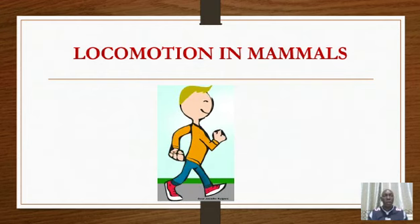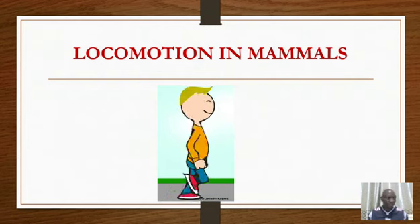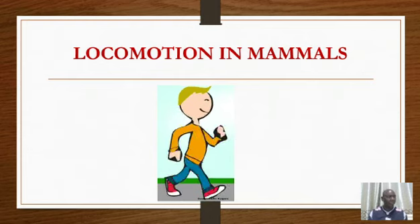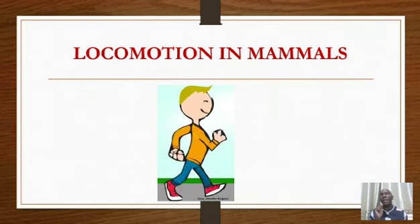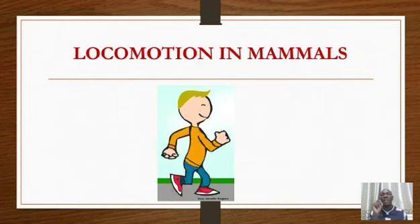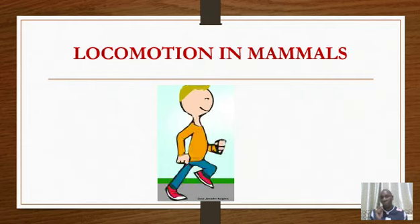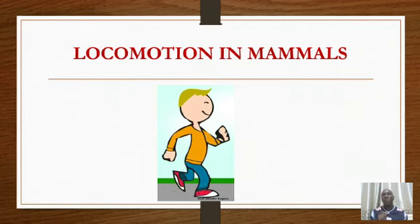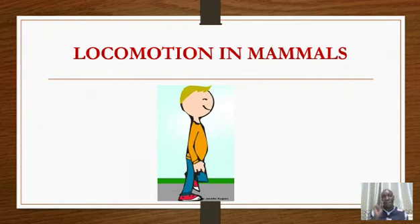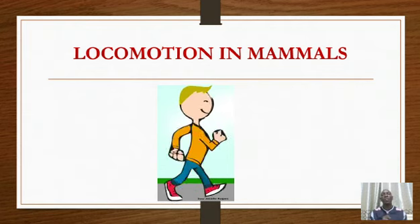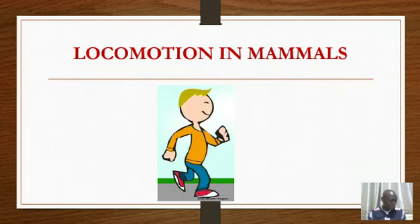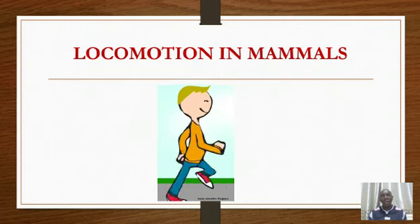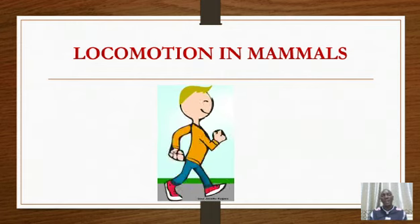This brings us to the end of locomotion in fish. We now come to locomotion in mammals — the last bit of this topic. Remember, we began by looking at locomotion in insects, then locomotion in birds, then locomotion in fish, and we are now moving to the last section: locomotion in mammals.